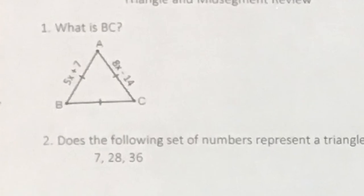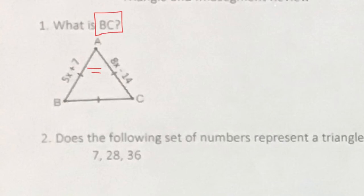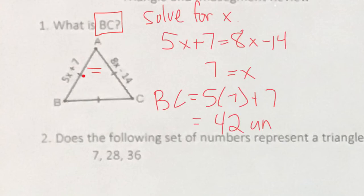Our first problem asks what kind of triangle it is — it's not isosceles, it is equilateral. It asks for the length of BC, and we don't have an equation for BC directly. But since it's equilateral, all three sides are equal, so we set two sides equal, solve for X, plug it back in, and that gives us the length of BC.